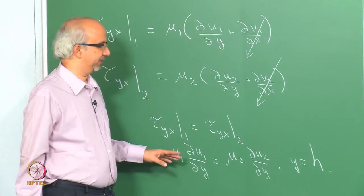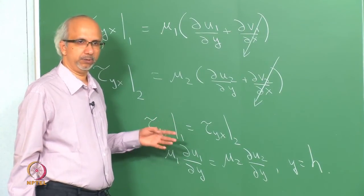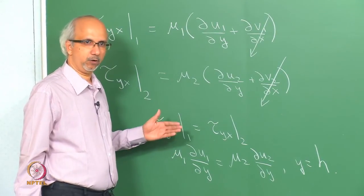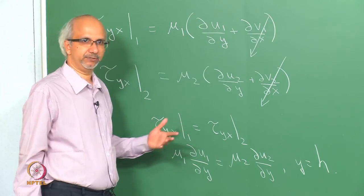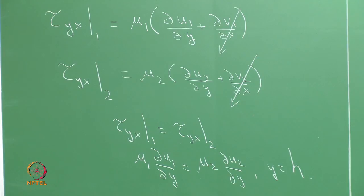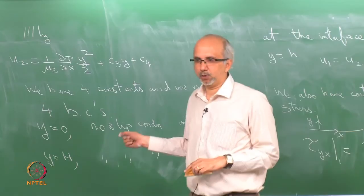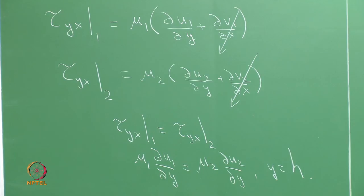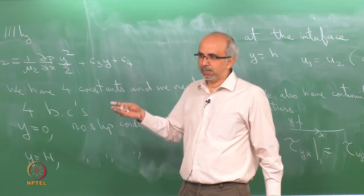These four boundary conditions — no-slip at both walls and continuity of velocity and shear stress at the interface — are used to find the four constants of integration from the second-order differential equations. Substituting back gives the complete velocity profile for both fluids.